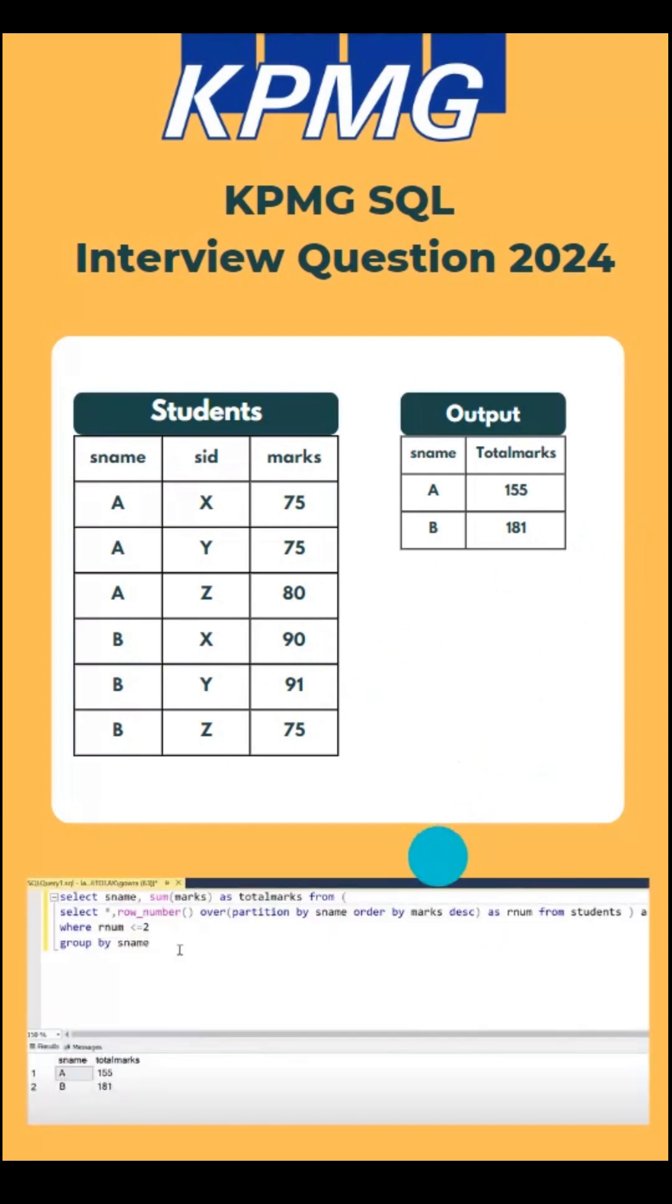We can solve this by using the ROW_NUMBER function. First, by using the ROW_NUMBER function, we can generate a sequence of numbers. After generating a sequence of numbers for our students, we can filter only the top 2 marks, and then on top of those top 2 marks, we can do a GROUP BY.